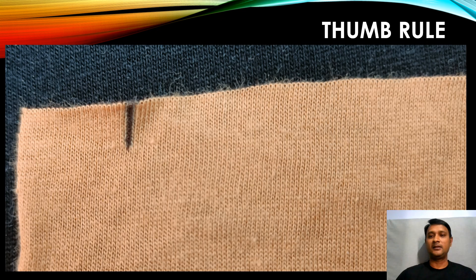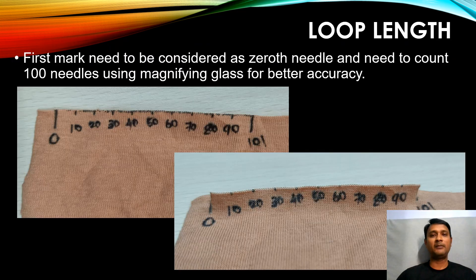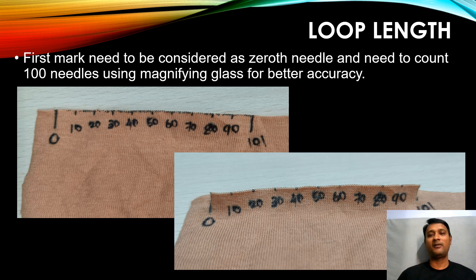As usual, we need to follow our thumb rule: remove all loose threads so that it is very neat to unravel the yarn. The first parameter we are going to analyze is loop length — the length of yarn utilized in the first 100 needles.